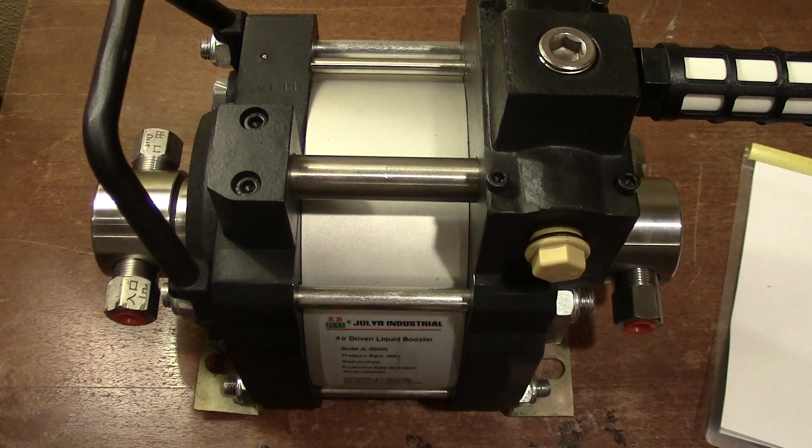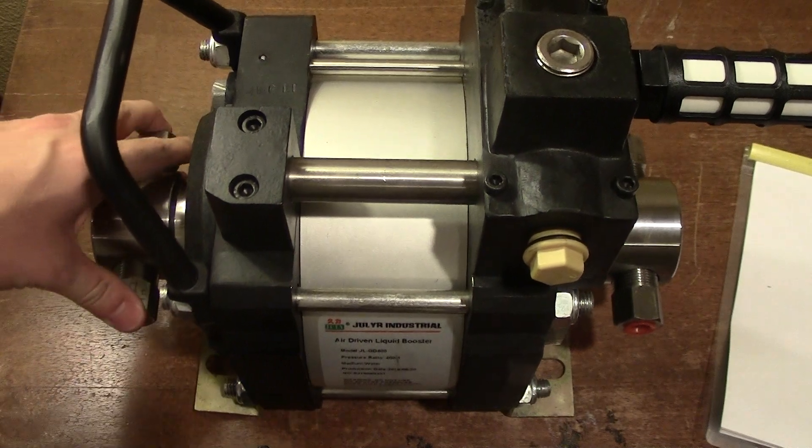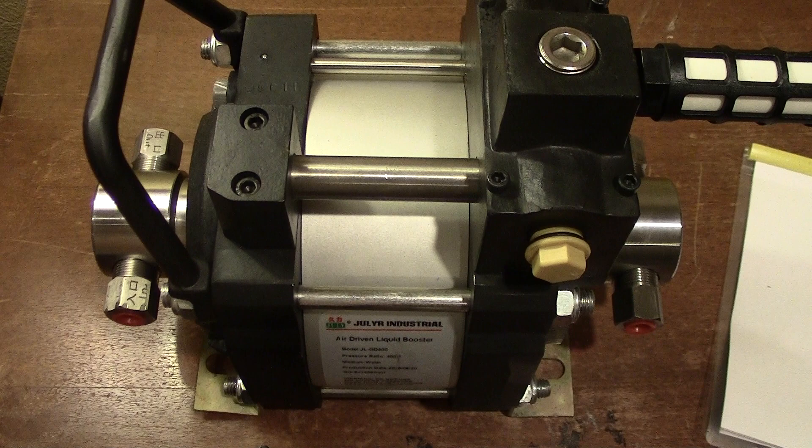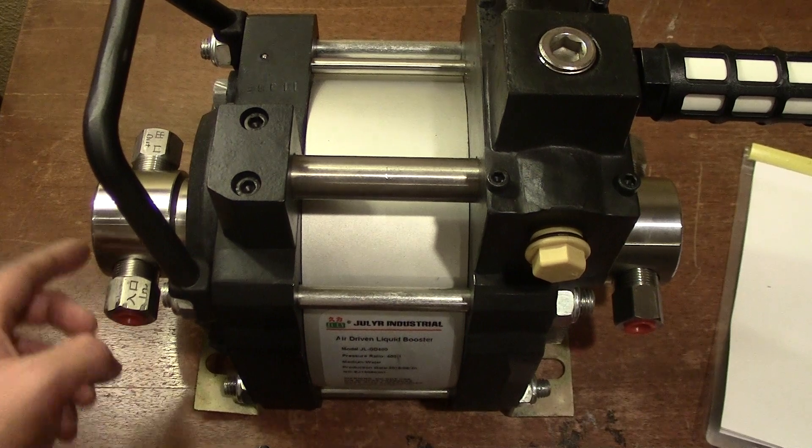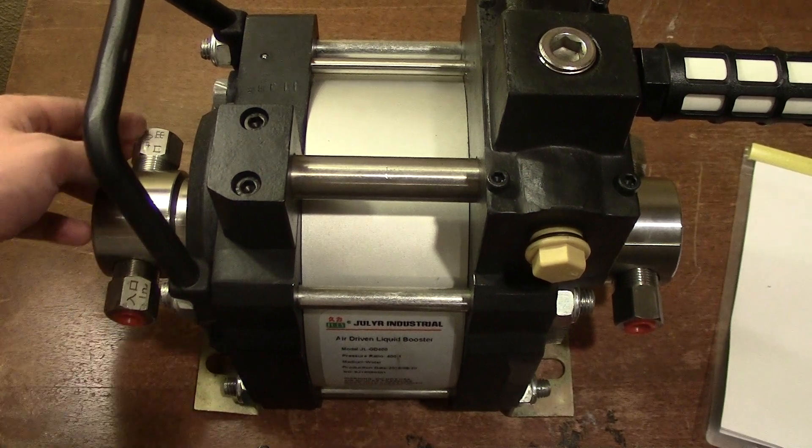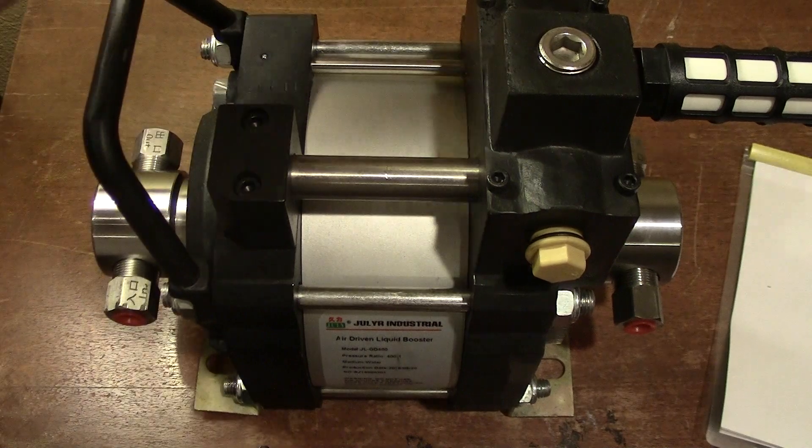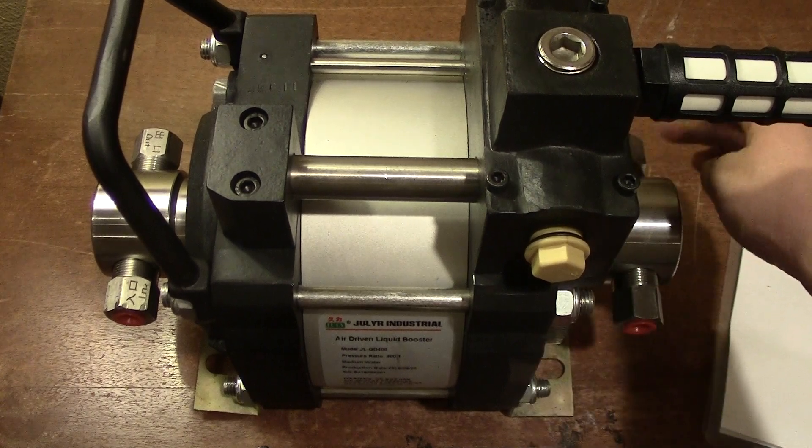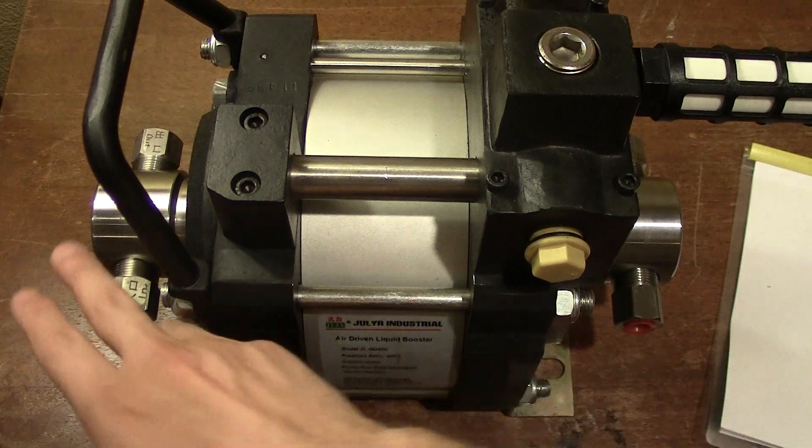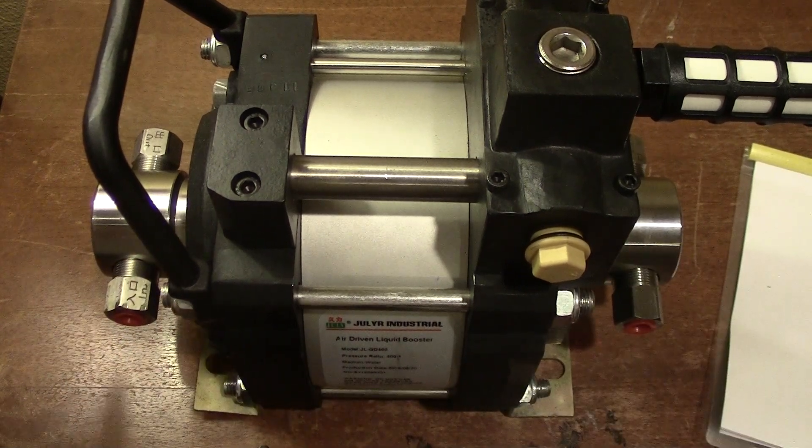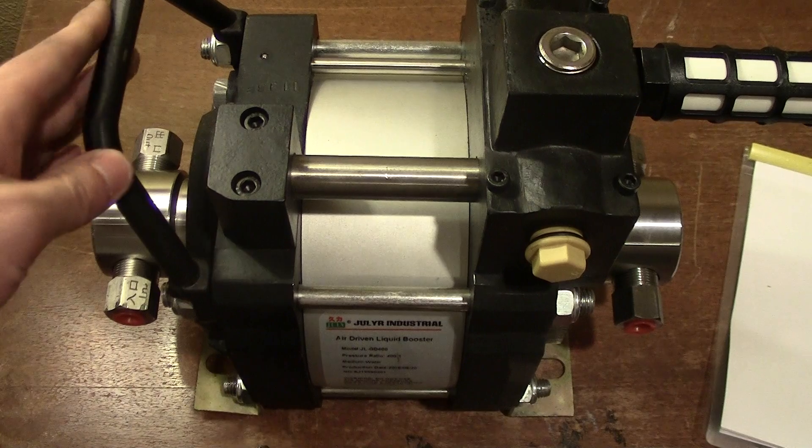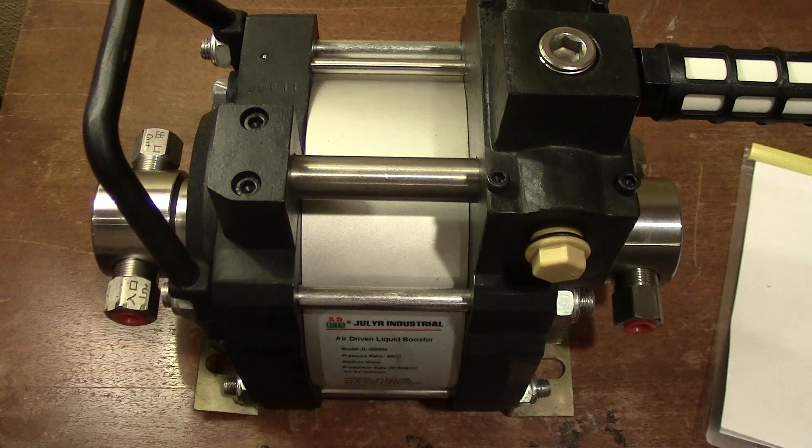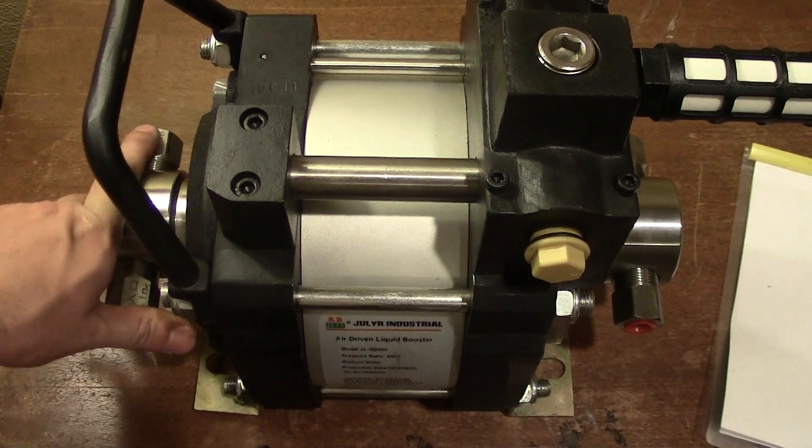There's another option, which is a double action double stage. It has two heads but instead water goes in through here and comes out high pressure, then it goes back into the pump on the end and comes out. Basically it compresses it twice. What happens in that case is you're going to double your pressure but you're going to decrease your flow rate by over half. That is not the case I wanted to do - I wanted to have high flow rate.